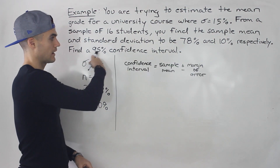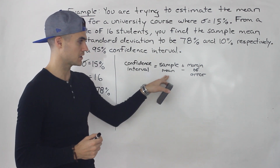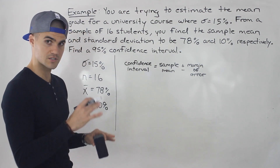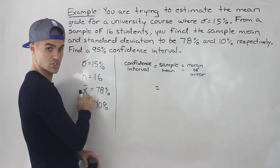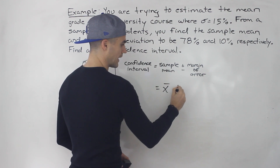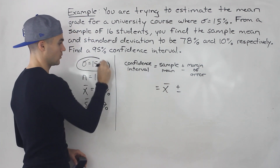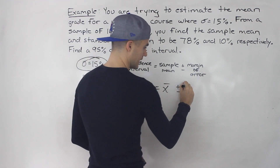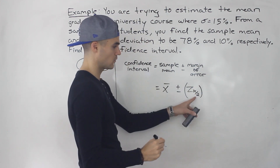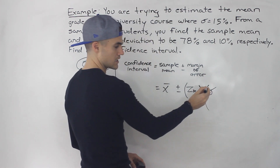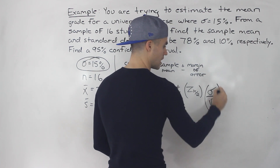What are we asked to do in this question? We're asked to find a 95% confidence interval. The general format is the sample mean plus or minus the margin of error. Now we're going to get more technical with this formula. The margin of error when the population standard deviation is known is: Z subscript alpha/2 times the population standard deviation, all over the square root of n.